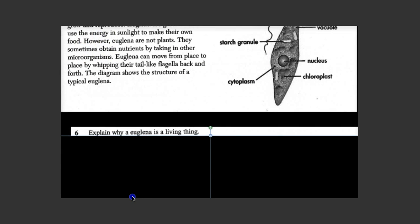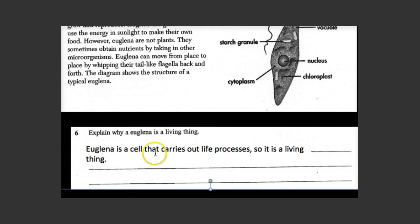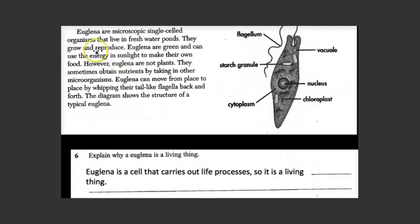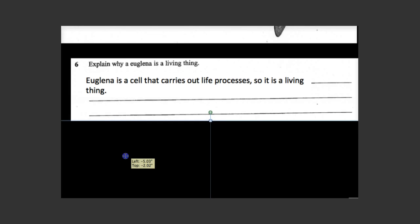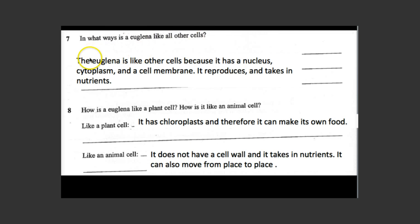Number six: Explain why euglena is a living thing. Euglena is a cell that carries out life processes, so it is a living thing — it can grow and reproduce, create food, take in food, and responds to stimuli. Number seven: In what ways is euglena like all other cells? Euglena is like other cells because it has a nucleus, cytoplasm, and a cell membrane, and it reproduces and takes in nutrients. Number eight: How is euglena like a plant cell and how is it like an animal cell? It's like a plant cell because it has a chloroplast and can make its own food. It's like an animal cell because it does not have a cell wall, it takes in nutrients, and it can move from place to place.